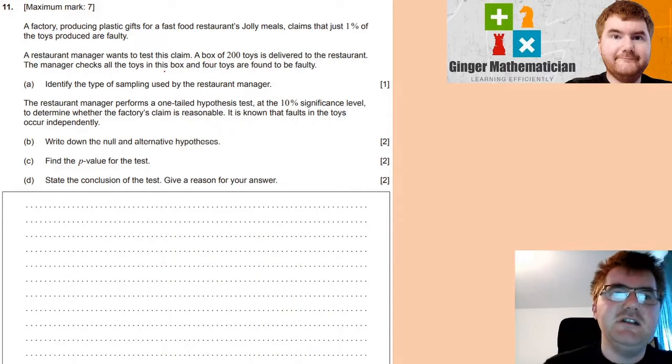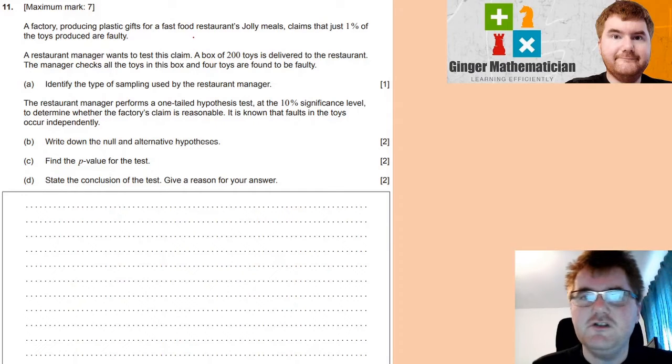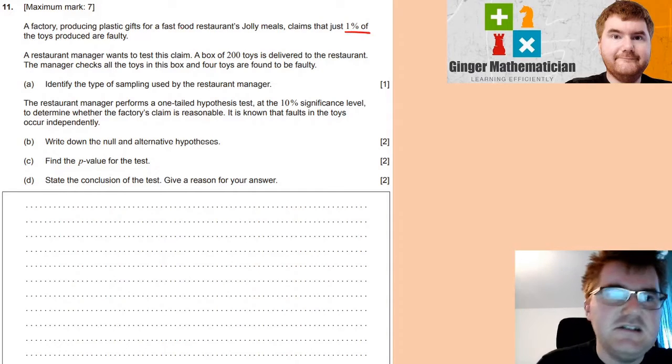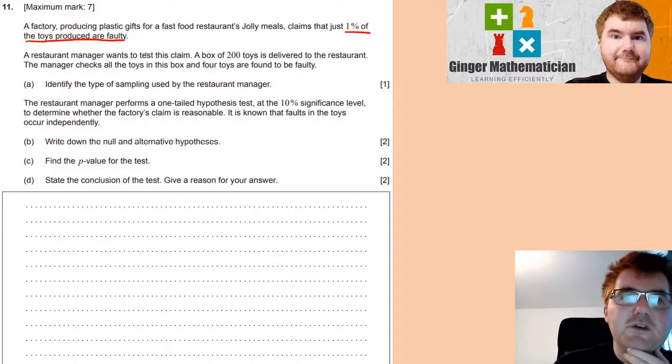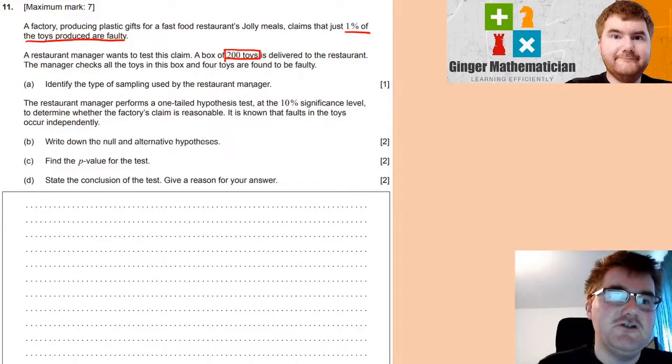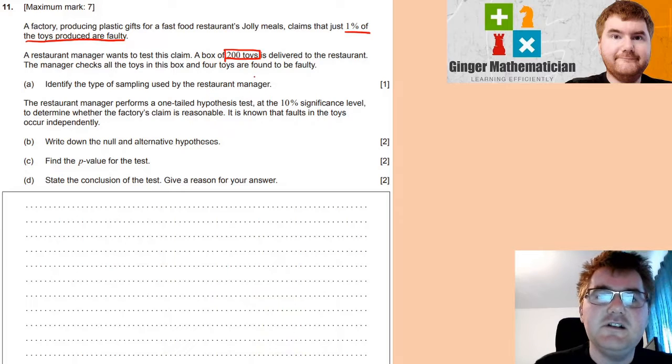So, a factory producing plastic gifts for a fast food restaurant's jolly meals claims that just 1% of the toys produced are faulty. Now, a restaurant manager wants to test the claim, and a box of 200 toys is delivered to the restaurant. And the manager is going to check all the toys in this box, and four toys are found to be faulty.